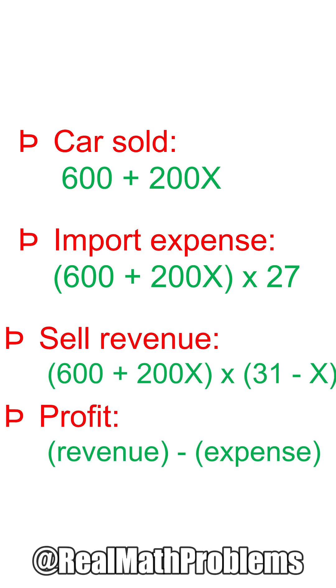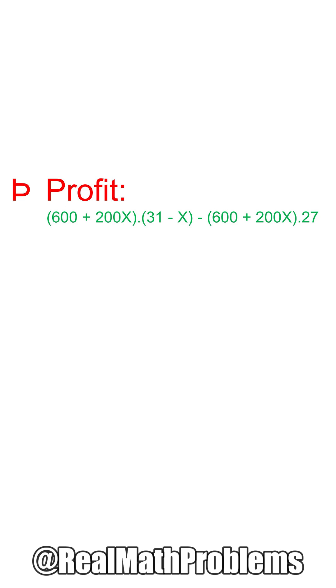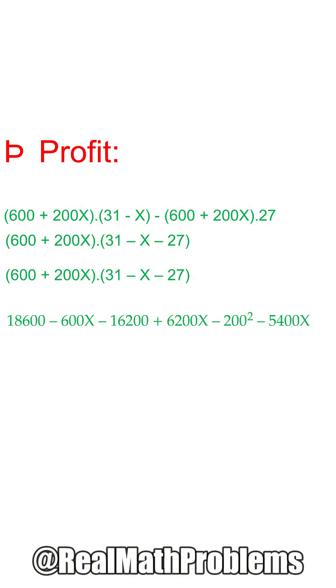From here, the profit Dave got is the revenue minus the cost. It will be shown as an expression of X. Simplify it and Dave got a quadratic polynomial, which can be considered as a function F(X).